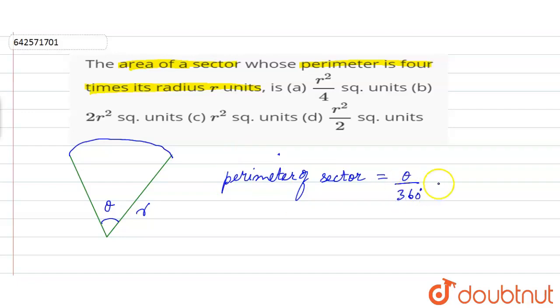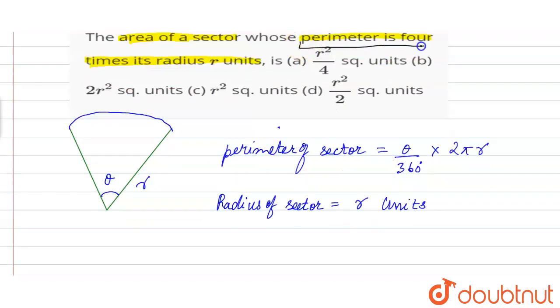Where radius of sector is equal to r units. So the condition is perimeter is four times the radius r. So perimeter is equal to theta by 360 degrees into 2πr that is equal to 4r.